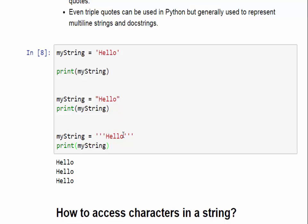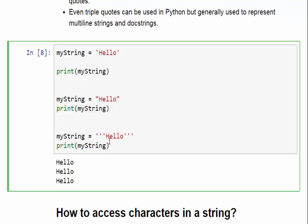There are three ways to create a string: single quotes, double quotes, and triple quotes — we used triple quotes in docstrings when we talked about input and output. For example, we can give 'hello' in single quotes or "hello" in double quotes; both are the same thing. We can also use triple quotes.